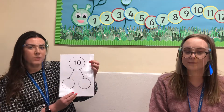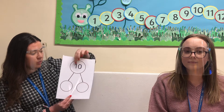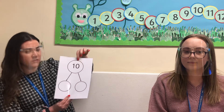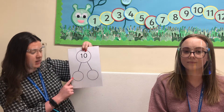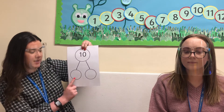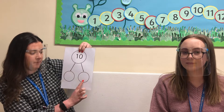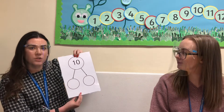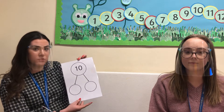We want to see if you can maybe ask an adult to print or draw the part-whole model for you. We've got the number 10 in the whole part of the model and we want to see how many different ways you can make 10. For example, you might have 6 here and 4 here. Maybe you could use some counters, some Lego, or maybe some sweets at home to help you work it out.